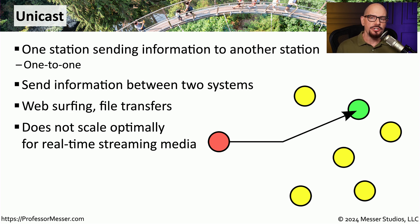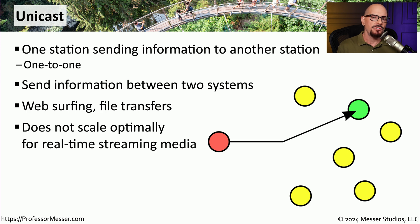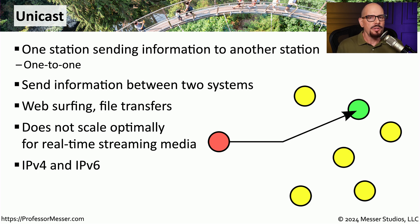This one-to-one relationship is also one of the disadvantages of unicast, especially if you need to send information to many people simultaneously. With unicast, you would have to build separate one-to-one communications with all of those individuals, and you would have to send separate data for each individual device. But for single communication between you and another device, whether you're using IPv4 or IPv6, you're probably going to use unicast.